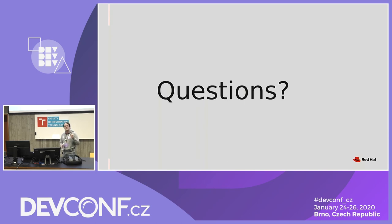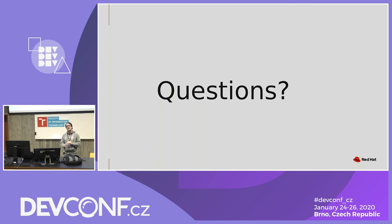The question is: why use conmon and not systemd? The answer is largely attach — we cannot convince systemd to forward what we need from the container standard streams. We really need something to hold open those streams and to forward content to and from the container. That's the big justification for conmon. And in the end, it's a few kilobytes of memory and basically zero CPU, so we're okay with leaving it around.